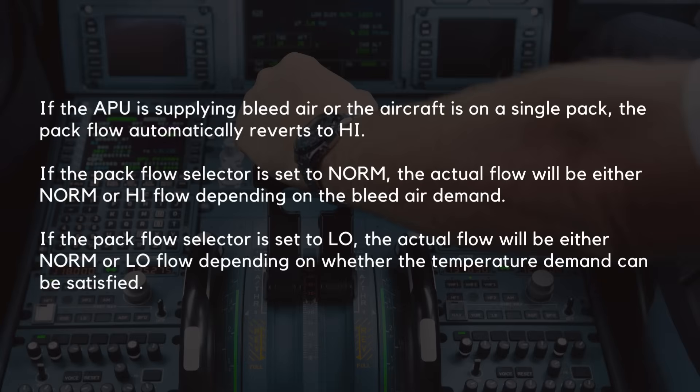If the APU is supplying bleed air or the aircraft is on a single PAC, the PAC flow automatically reverts to high. If the PAC flow selector is set to normal, the actual flow will be either normal or high flow depending on the bleed air demand. If the PAC flow selector is set to low, the actual flow will be either normal or low flow depending on whether the temperature demand can be satisfied.